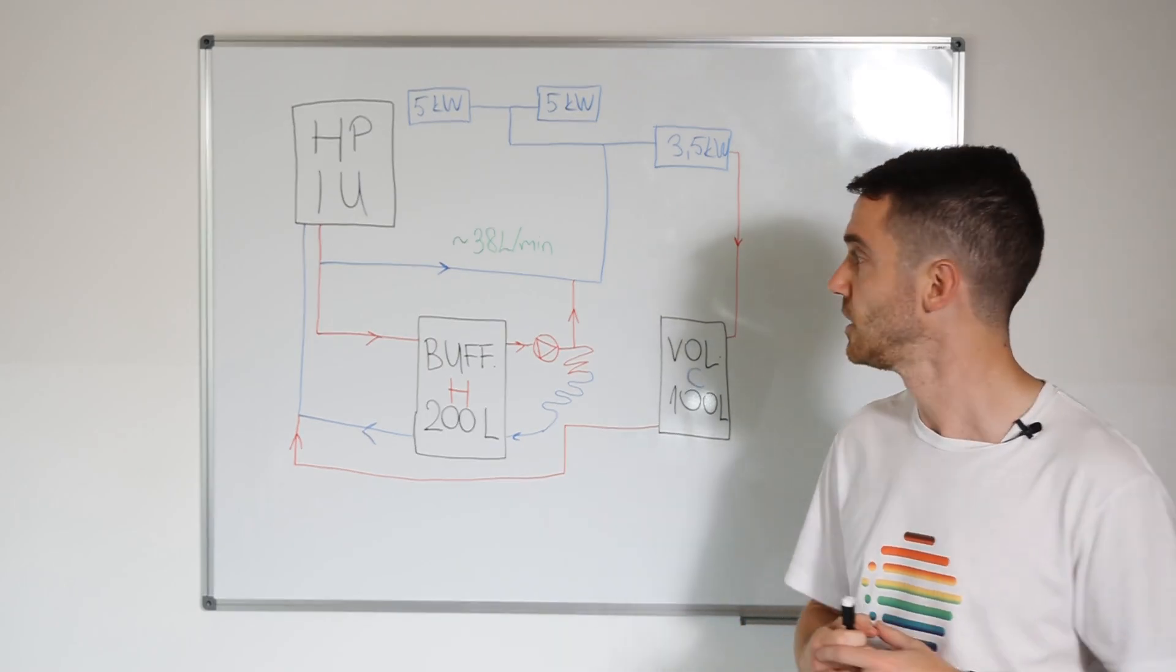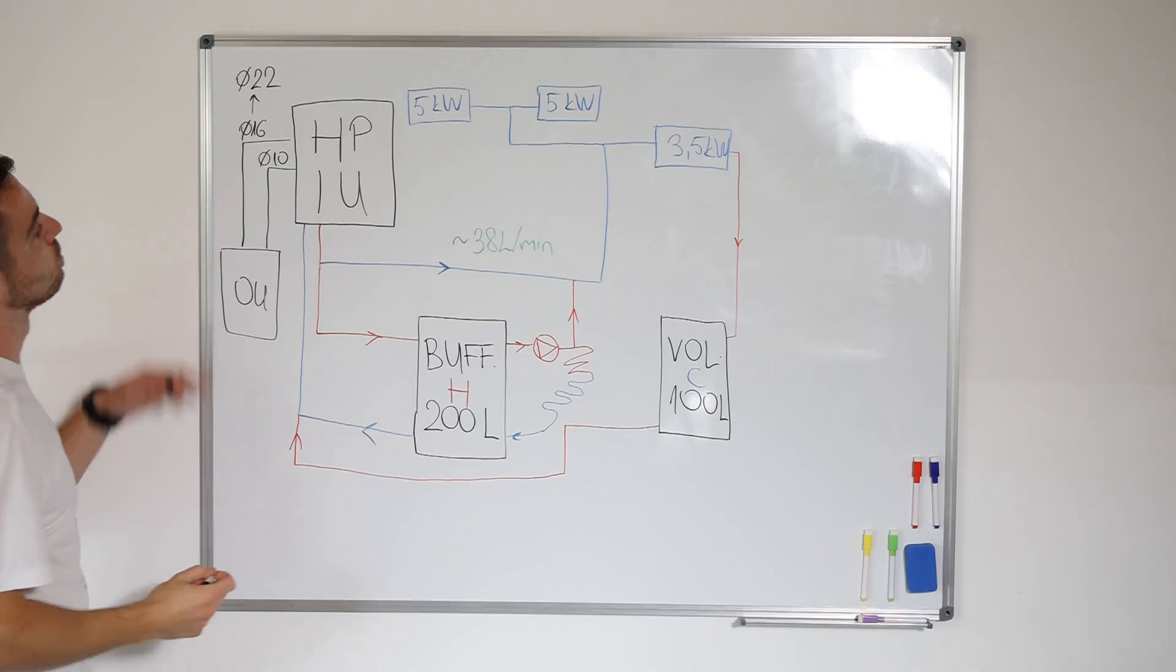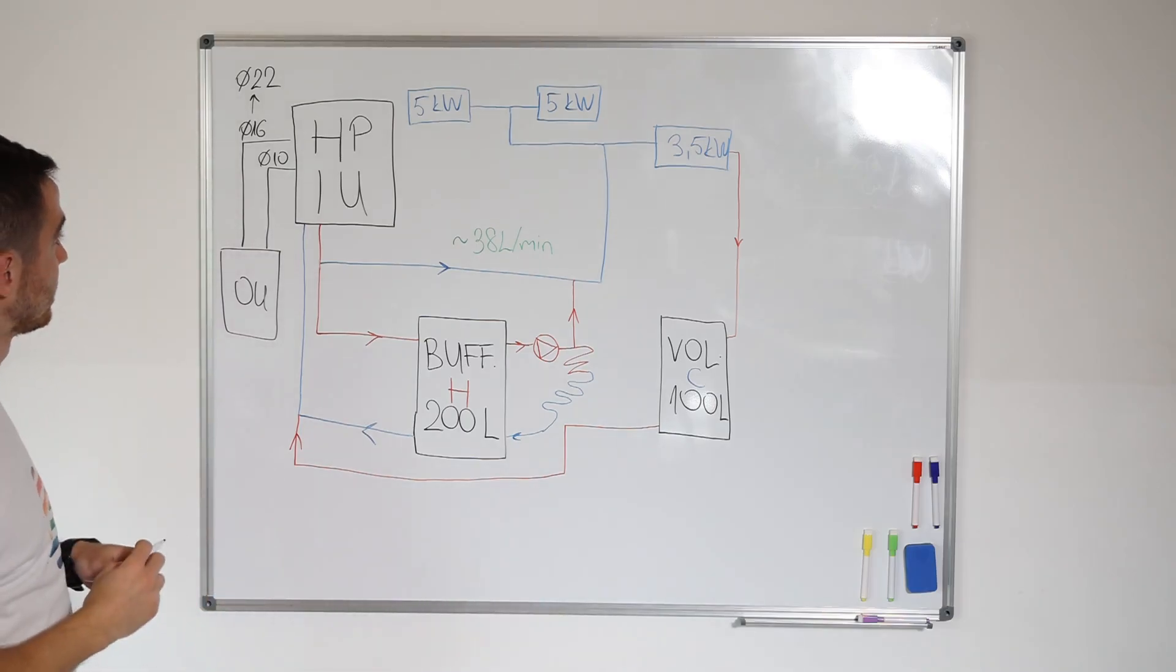Well, I came to the site and first thing we realized that between indoor and outdoor, so outdoor is not so important here, but between indoor and outdoor unit, instead of refrigerant pipes 16 and 10, installer put 22. So refrigerant technology guys who are from that field will know what this means.